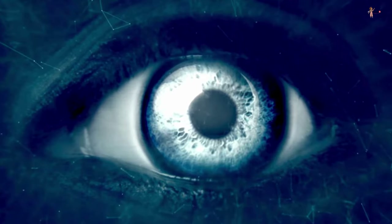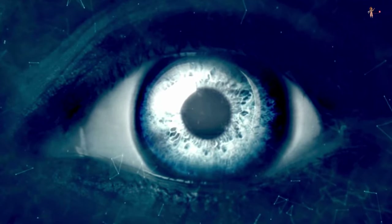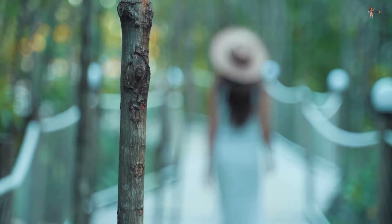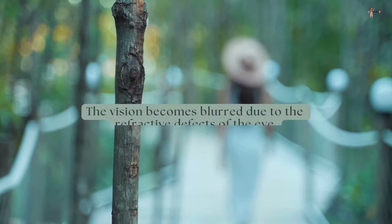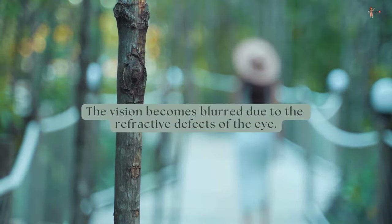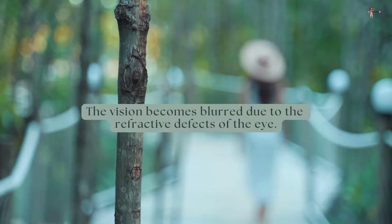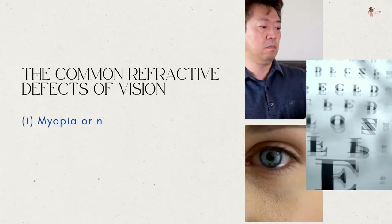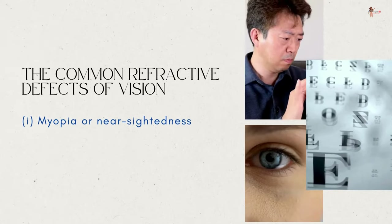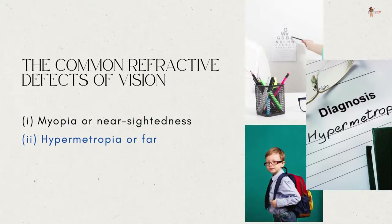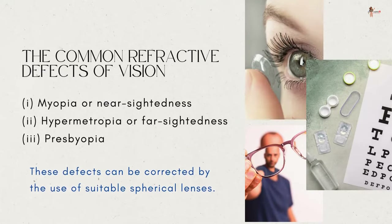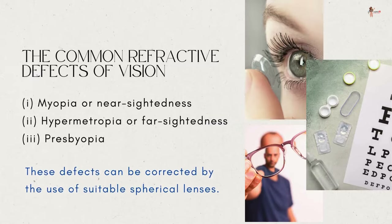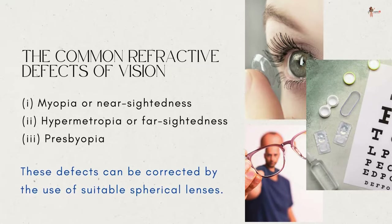Sometimes the eye may gradually lose its power of accommodation. In such conditions, the person cannot see objects distinctly and comfortably, and vision becomes blurred due to refractive defects of the eye. There are mainly three common refractive defects of vision: myopia or nearsightedness, hypermetropia or farsightedness, and presbyopia. These defects can be corrected by the use of suitable spherical lenses.